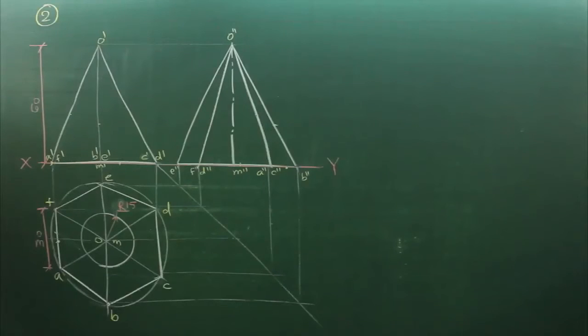Now in this sum, they have asked us to draw horizontal trace. So that means it is auxiliary vertical plane. So it will come in top view and they have said it is 15 mm away from the axis.